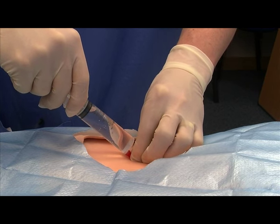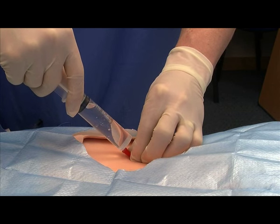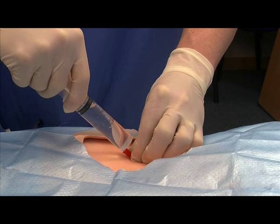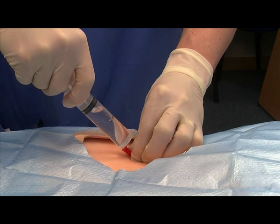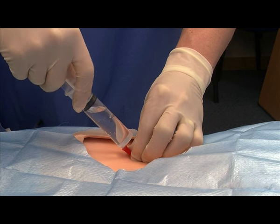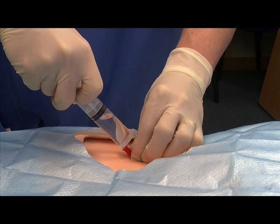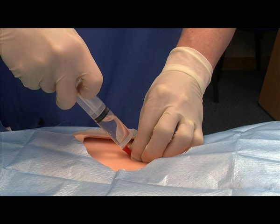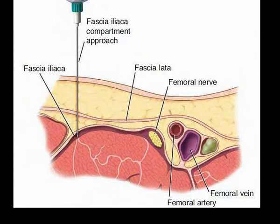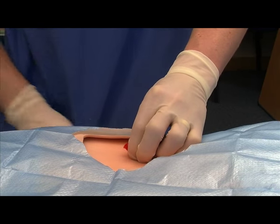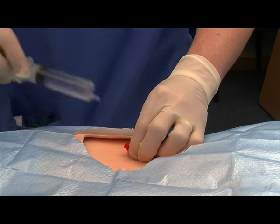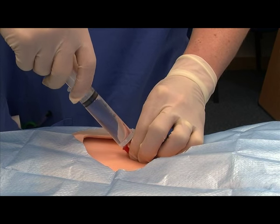Fix the position of the proximal plastic part of the needle securely with your non-injecting hand. Aspirate before injection and after every 5ml injected. If aspiration is negative, start injecting the local anaesthetic. There should be no resistance to injection. If there is, the needle tip is likely to be within the iliacus muscle — in this case, withdraw slightly until injection is easy. There should be no pain or paraesthesia on injection. After injection of the first 20ml, change the syringe and continue to inject the remaining volume. It is common to observe some of the injected fluid coming back through the needle during the change of the syringe.